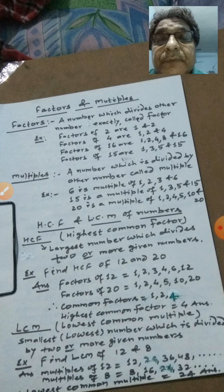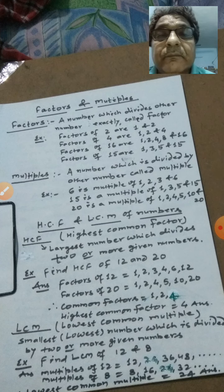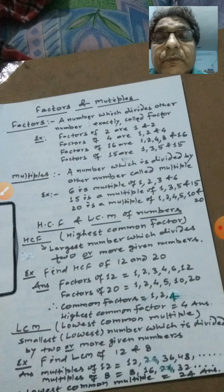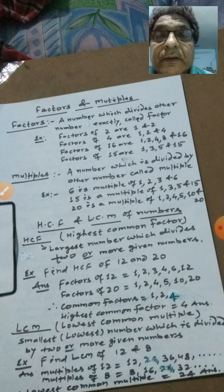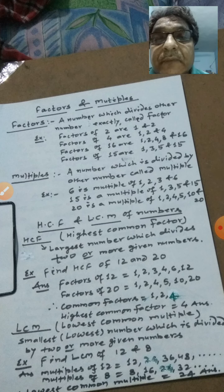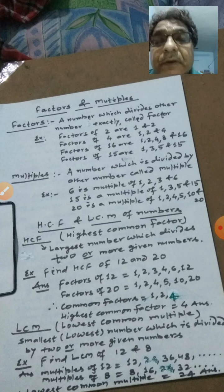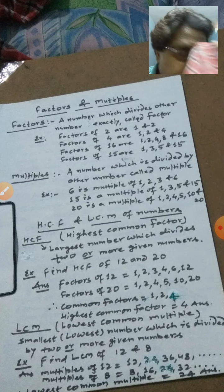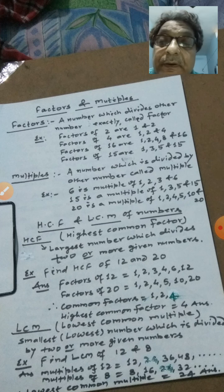So the factors of 15 are 1, 3, 5, and 15. Similarly, the factors of 20 are 1, 2, 4, 5, 10, and 20. So we can see which numbers are the multiples we can divide by.